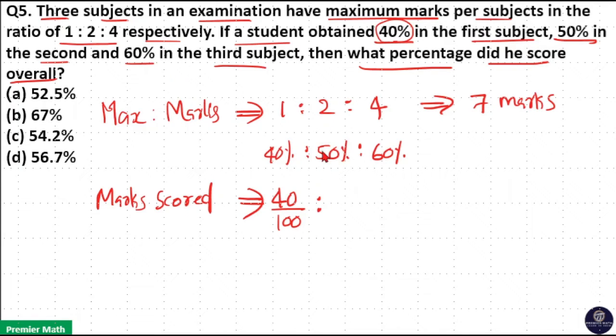In the second subject, he scored 50% into 2, which is 100, or 100 by 100.